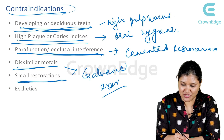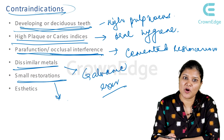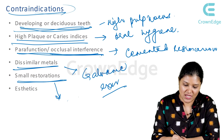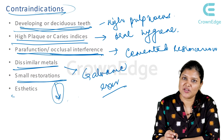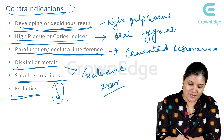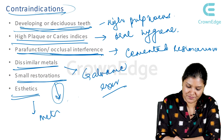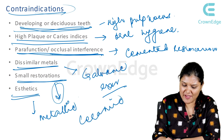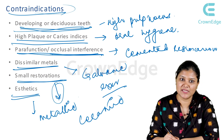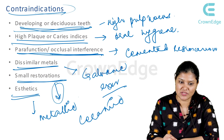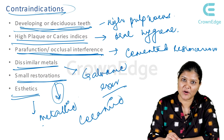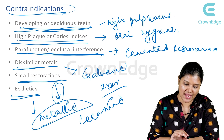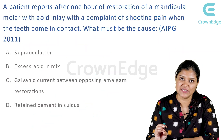Small restorations are a contraindication because the cavity preparation is extensive for inlay, so for small restorations inlays and onlays are usually not indicated. Aesthetics: because it is a metallic restoration — although ceramic inlays and onlays have come up — we are particularly talking about cast metal inlays and onlays, which are not aesthetic. So it becomes a contraindication in aesthetic areas.